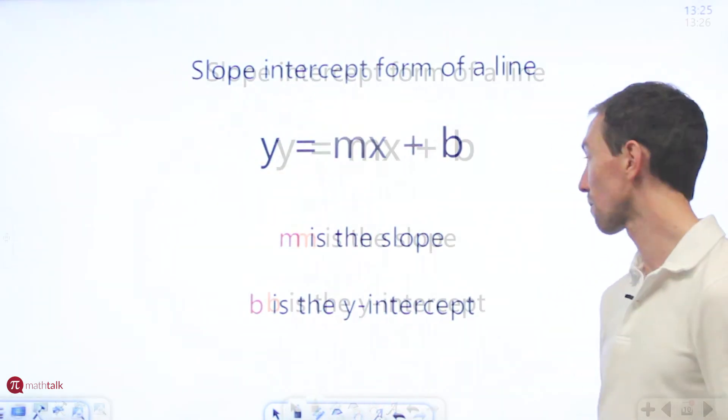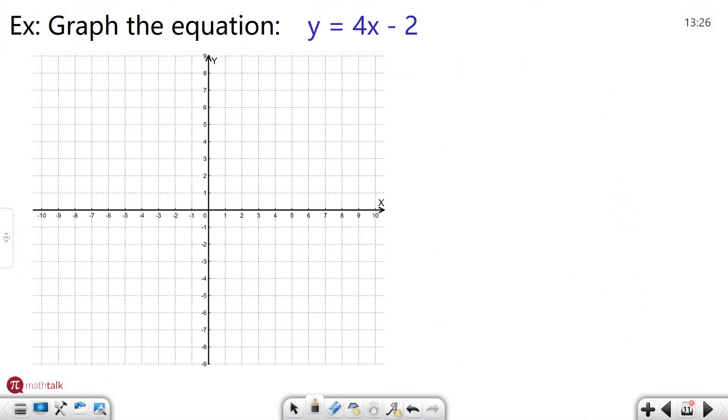So let's look at a couple examples. We have an example that says graph the equation y equals 4x minus 2. So when I look at this the first thing I want to think of is what is my y-intercept and what is the slope. So remember in your equation y equals mx plus b, m is your slope, b is the y-intercept.